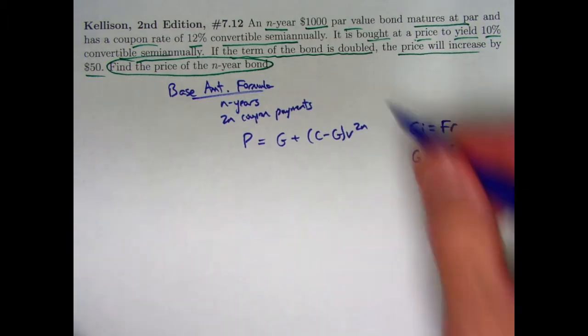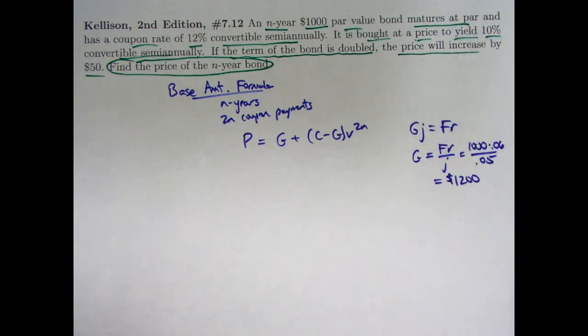We know C as well, that's a thousand, since it's maturing at par. We can pretty easily use this formula and use the fact that we've got the two bonds here to use the formula again for the second bond and ultimately perhaps solve for v to the 2n to help us finish the problem. Makeham's formula also does not involve a-n, but this seems to be the most handy based on wanting to solve for v to the 2n.